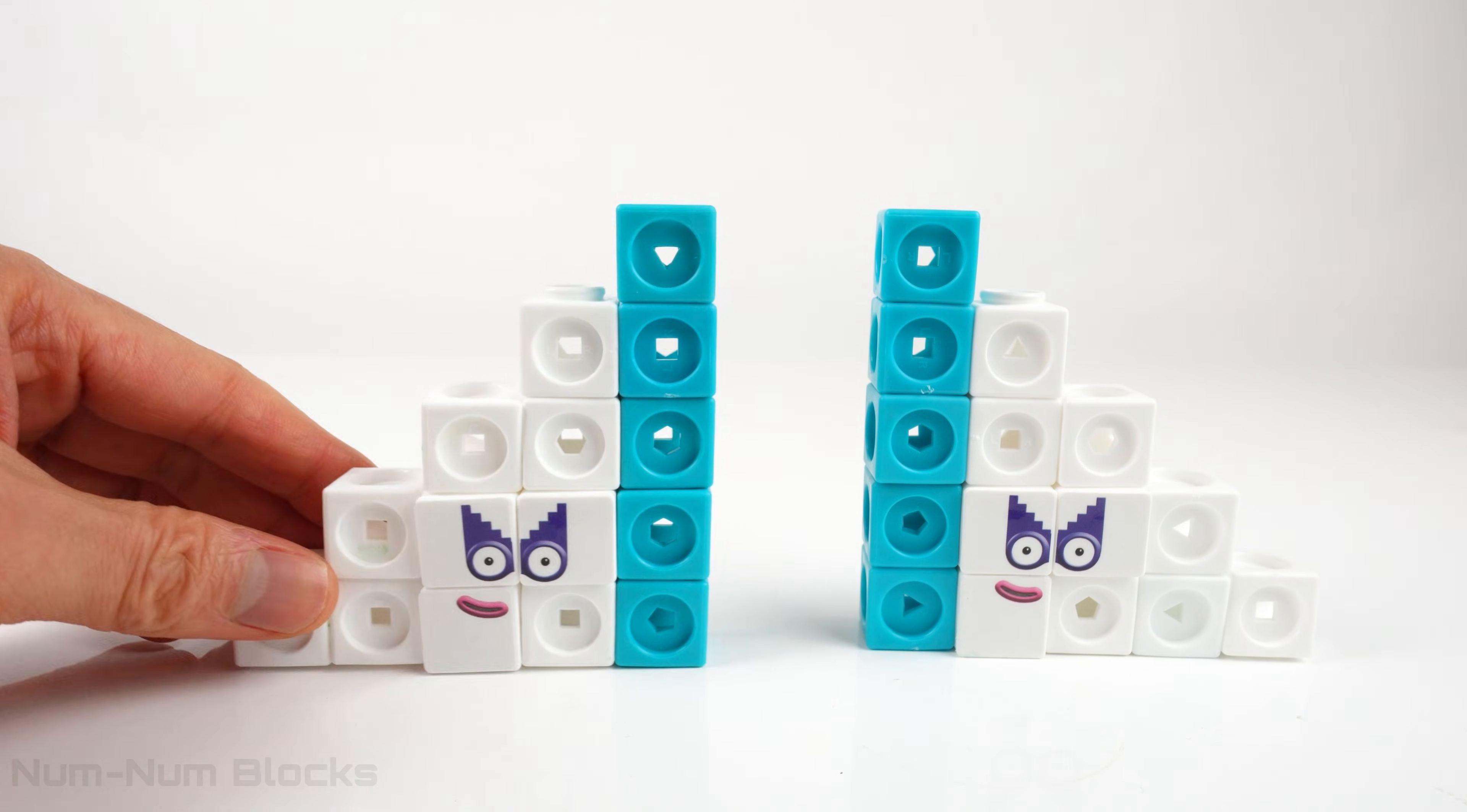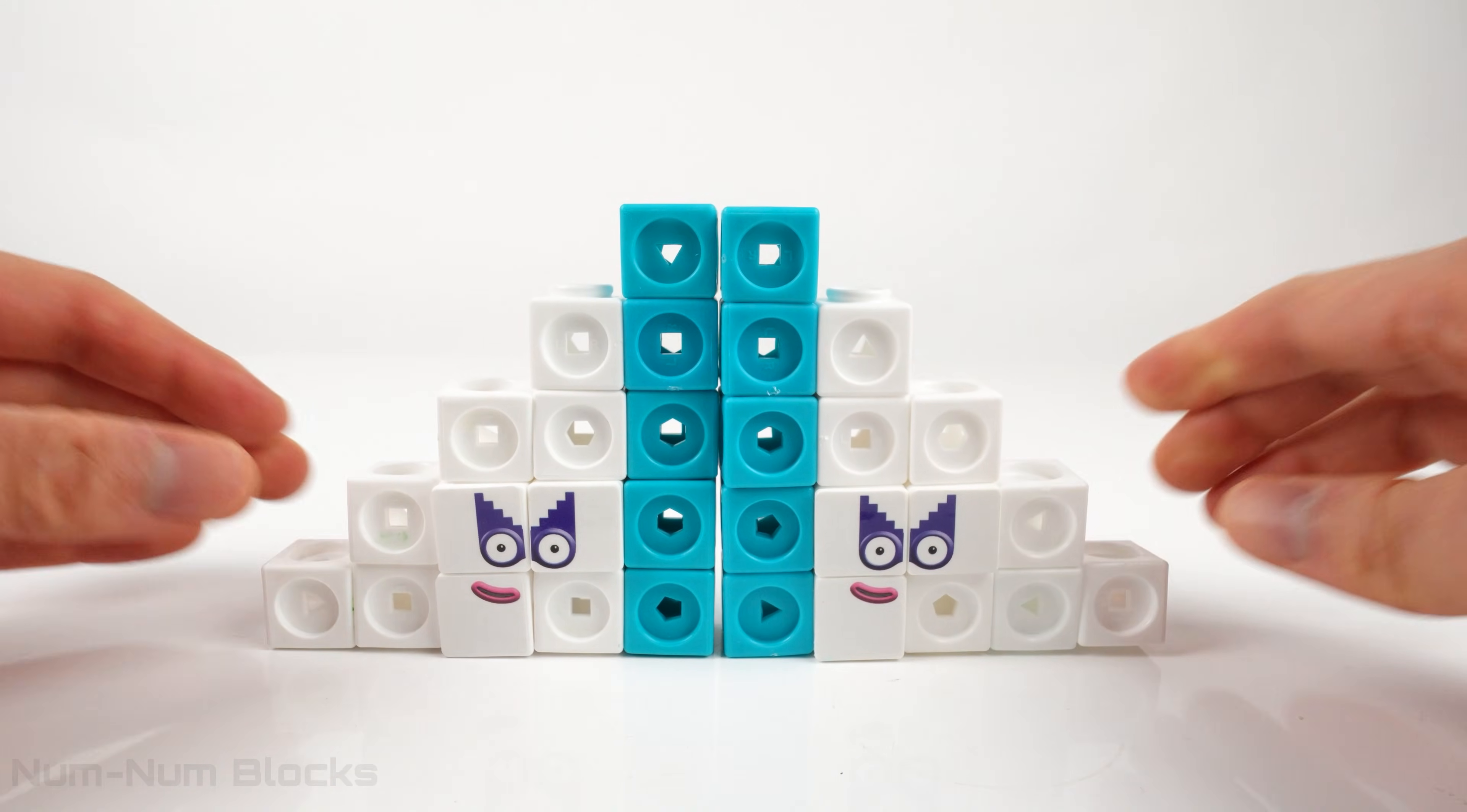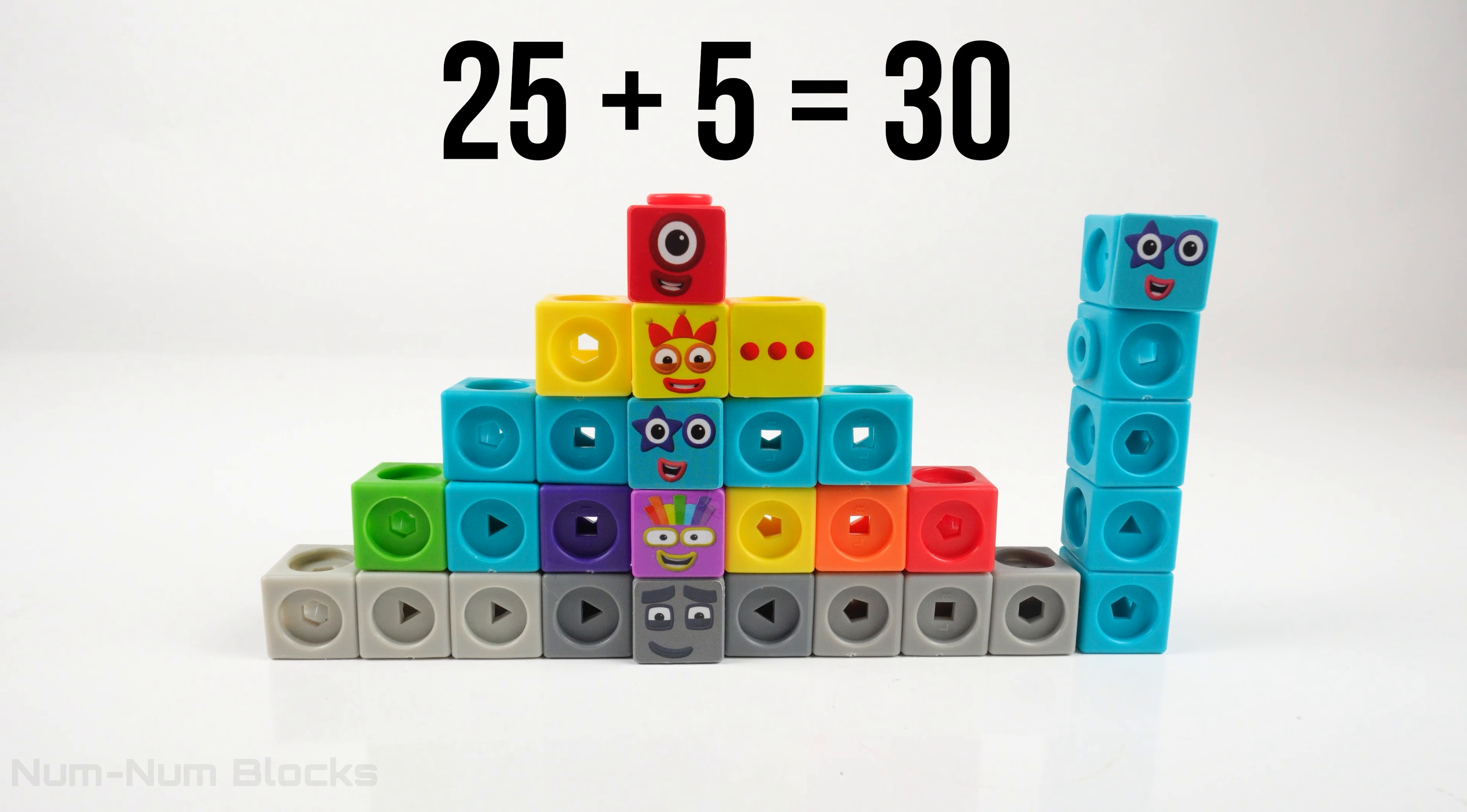There are two Agent 15s. 15 plus 15! Hush, hush! 15 plus 15 is 30. This odd pyramid is 25 blocks. 25 blocks plus 5 is 30.